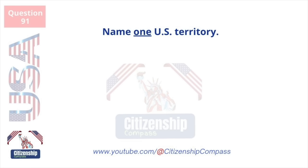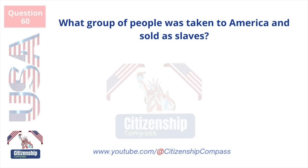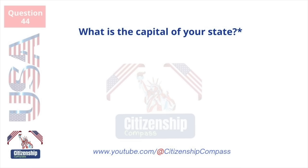Name one U.S. territory. Guam. What group of people was taken to America and sold as slaves? Africans.